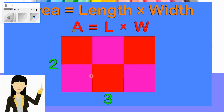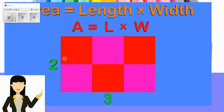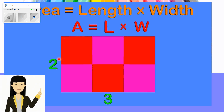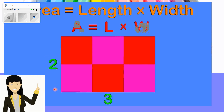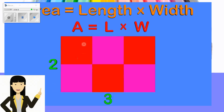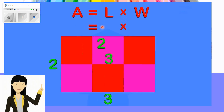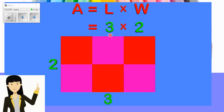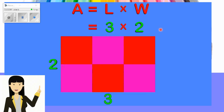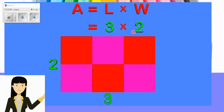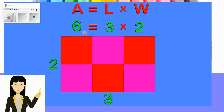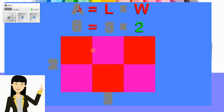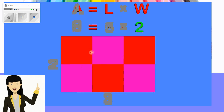If I want to find the area, there is an easier way — just use the formula. The formula says: area (A) equals length (L) multiplied by width (W). The length is three and the width is two, so three times two equals six. Our answer is correct because when I count all the squares, all of them are six.